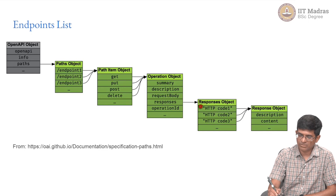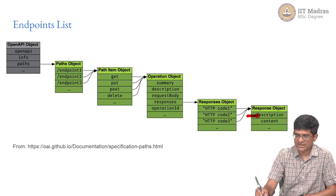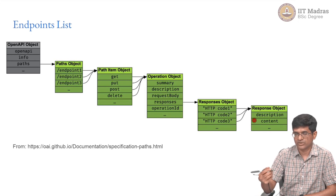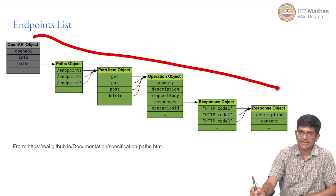These responses in turn could correspond to different HTTP codes — 200, 404, 400, and so on. For each of those response codes, it has more information which could say something like 'status OK — everything is fine, I created a new shopping cart for you', and the content which says what was finally created. So this is the overall structure you can expect to see inside an OpenAPI specification document.